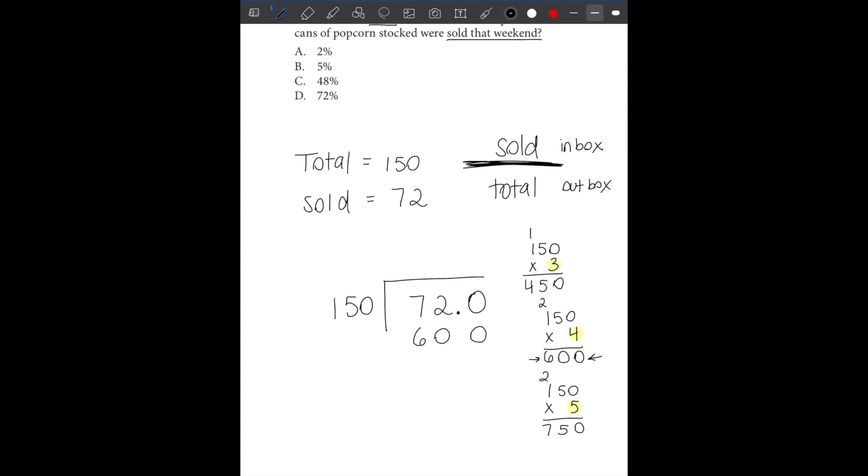So 150 can go into 720 4 times. We can bring our decimal there and put our 0 there. So now 720 minus 600. 0, 2, 1. So our answer is 120.